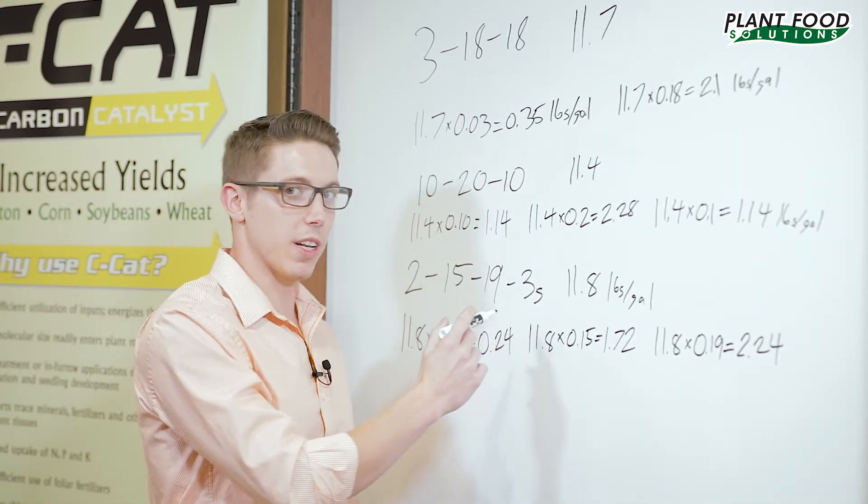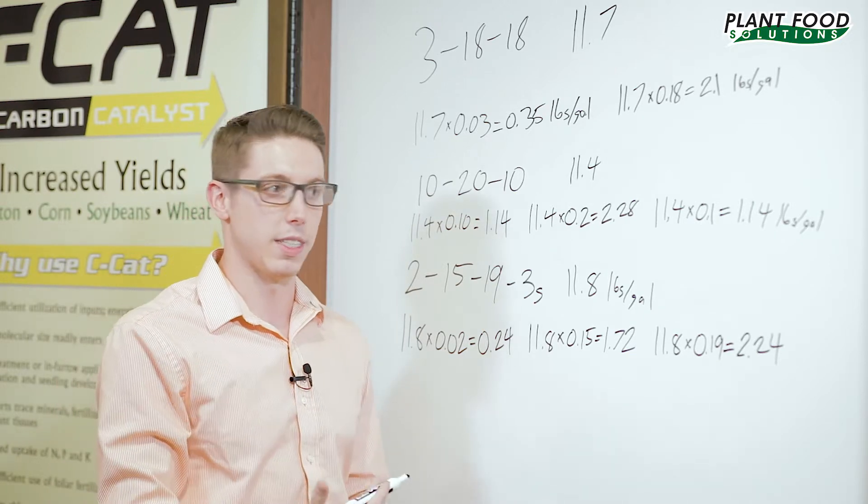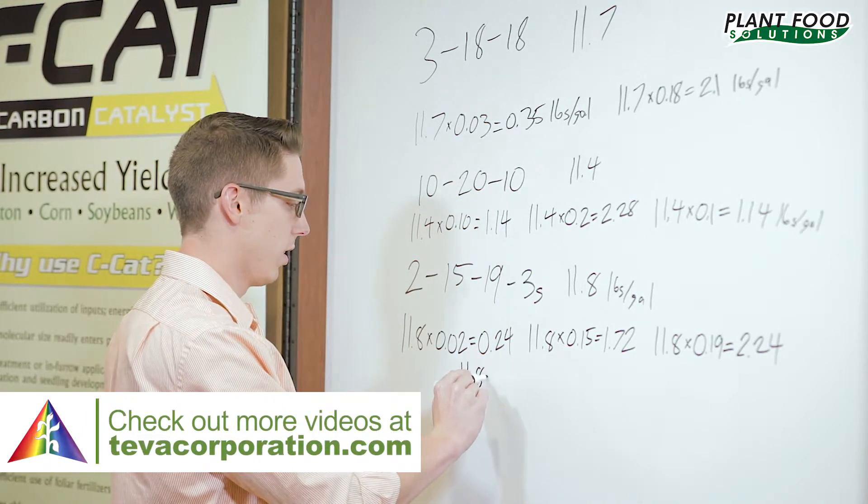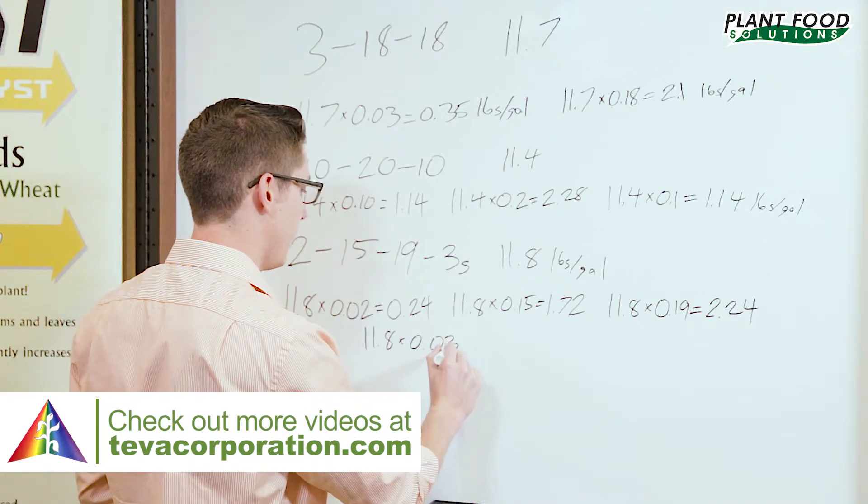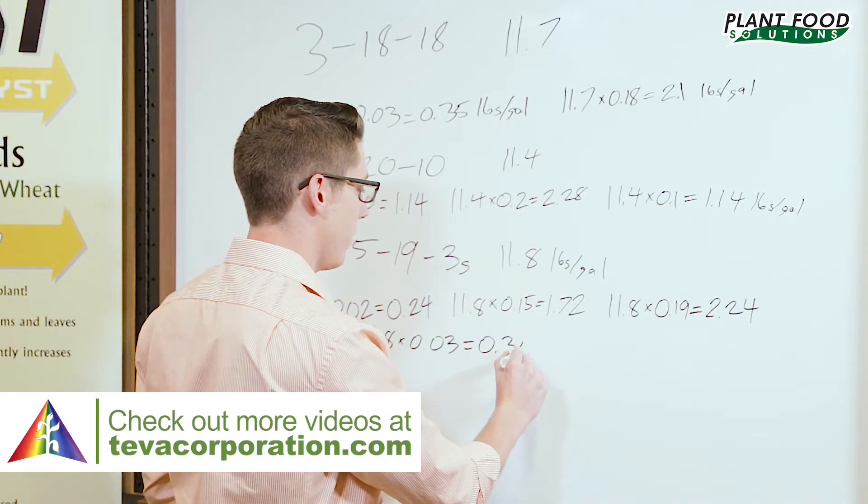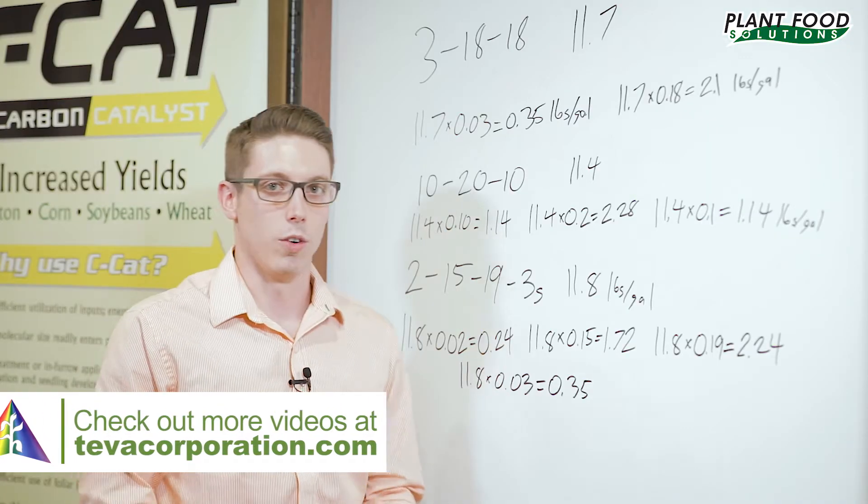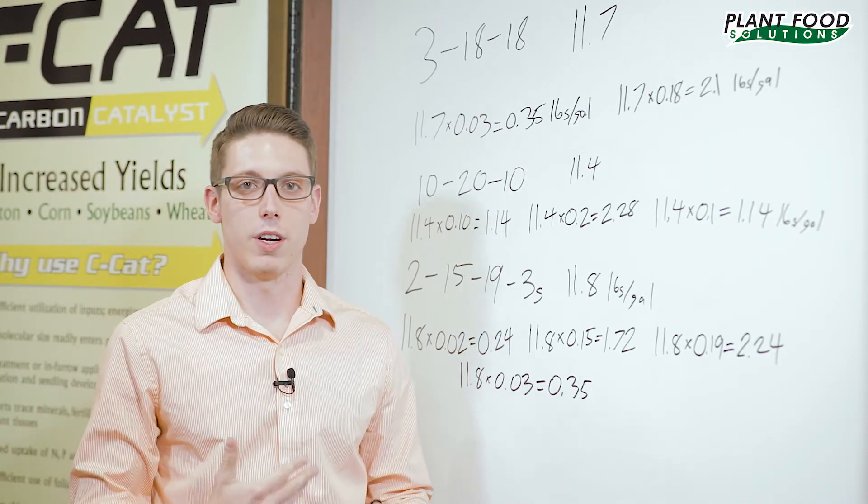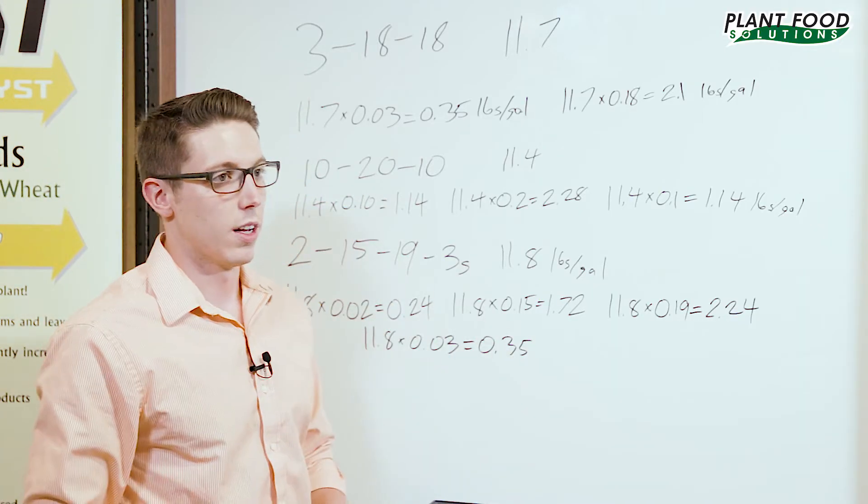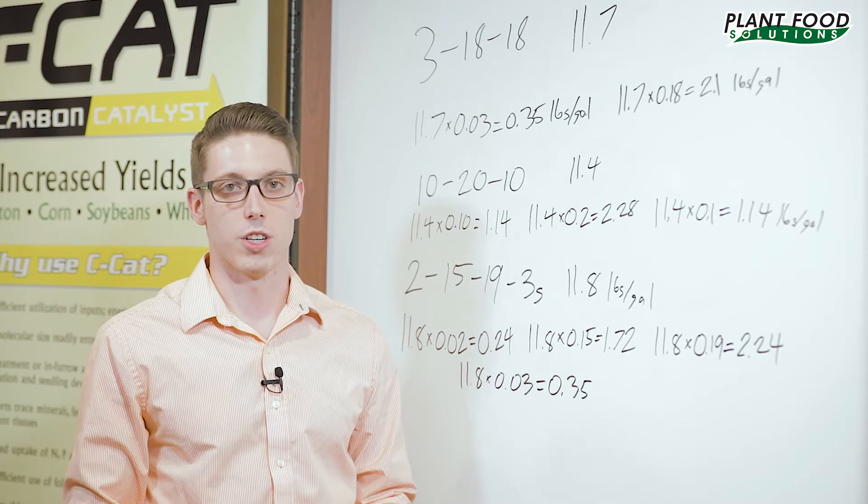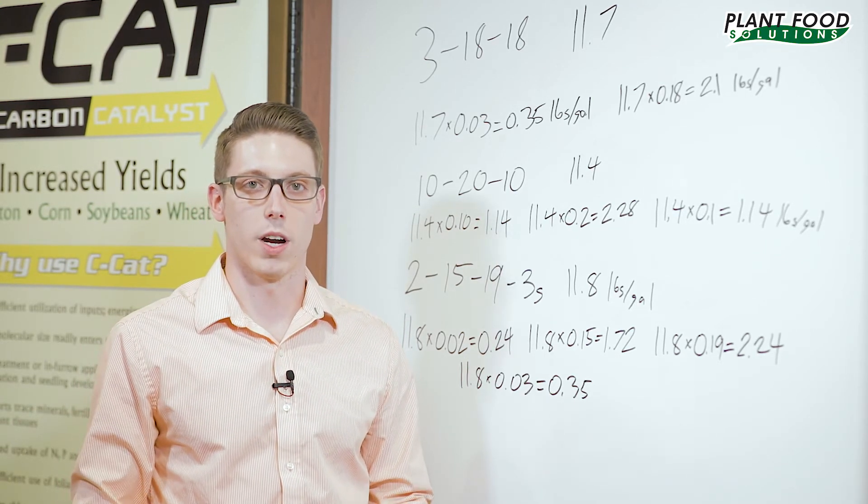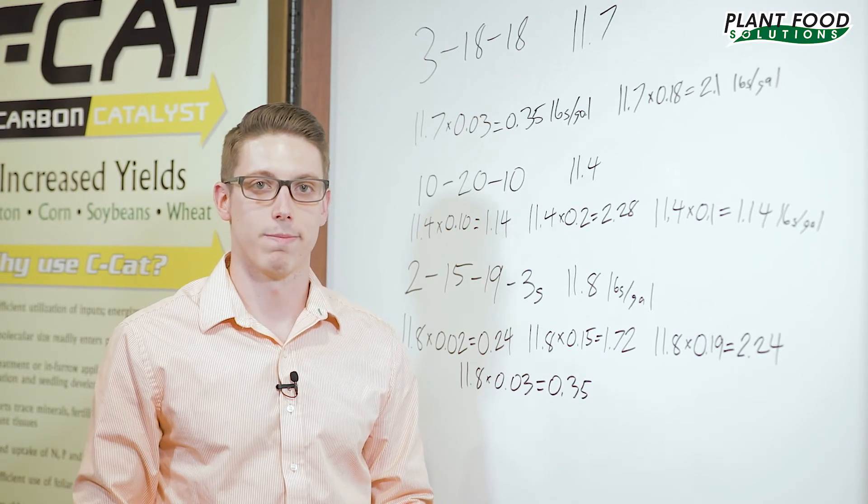So the last one, that sulfur is a little different, but you're going to do it the exact same way. So it's going to be 11.8 times 0.03, to come up with 0.35. You can find out how much of any nutrient you're getting of any analysis of liquid fertilizer using this very easy equation here. We hope that this helps you and that you can better understand what you're getting in your fertilizers. Thanks.